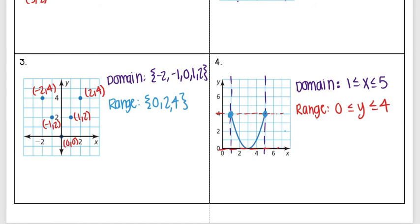To recap: your range is all your y values, your domain is all your x values. If they're connected, use a compound inequality — put x for domain and y for range. Domain is how far left to how far right the graph goes; range is the lowest point to the highest point. That's all for this video — next we'll learn about independent and dependent variables.